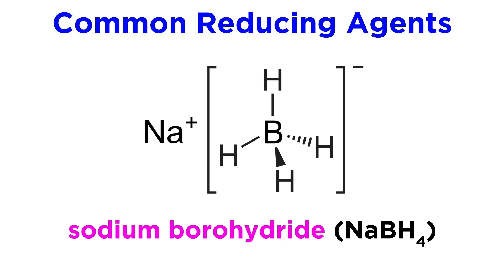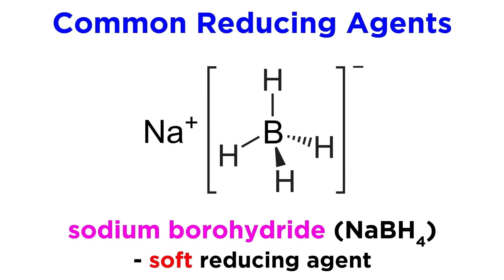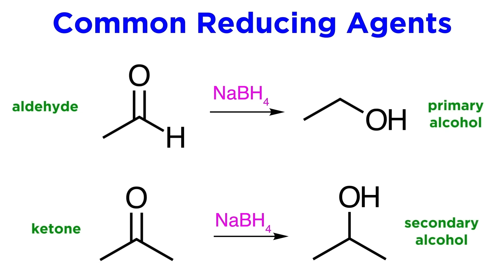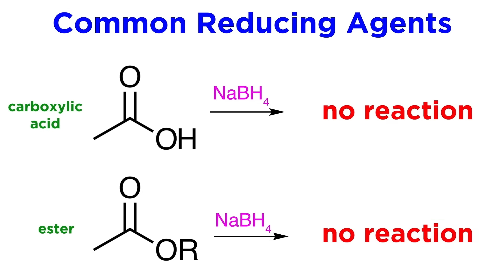First we will look at sodium borohydride. This is a soft reducing agent, in that it can only reduce aldehydes and ketones, taking them to the primary alcohol and secondary alcohol respectively. It will not be able to reduce carboxylic acids or esters.